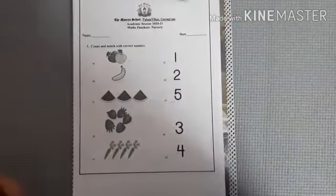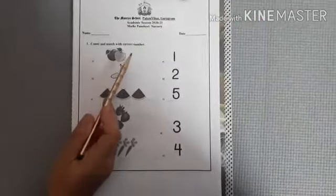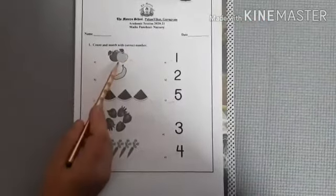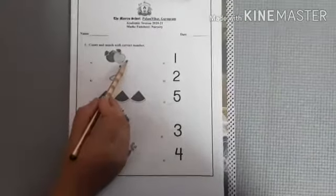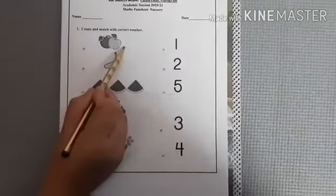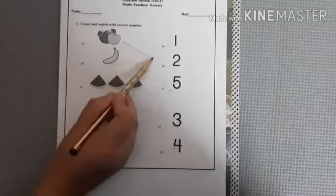Let's do the fun sheet. Count and match with correct number. Can you see how many apples are there? Yes, two apples.